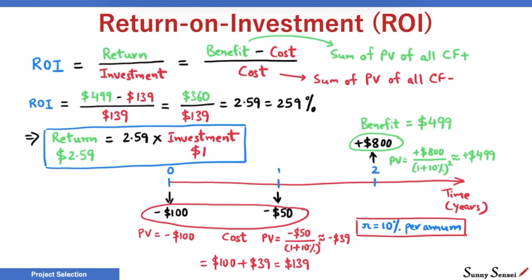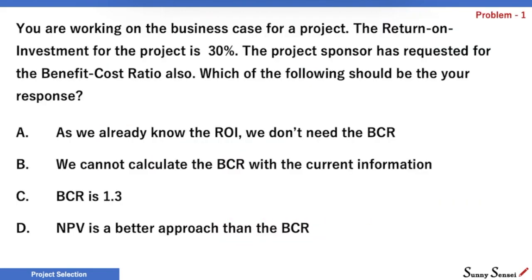Next, we will try solving a few problems. You are working on a business case for a project. The return on investment for the project is 30%. The project sponsor has requested the benefit-cost ratio as well. Which of the following should be your response? A: As we already know the ROI, we don't need the BCR. B: We cannot calculate the BCR with the current information. C: BCR is 1.3. D: NPV is a better approach than the BCR. Please pause the video and try to find the correct choice.